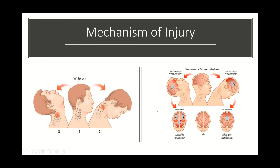Another thing we don't want to forget is what's happening to the brain during a whiplash injury. If there is any type of whiplash injury that occurs, whether it's from a sport, an auto accident, or a significant fall, we also want to consider concussion, because the brain moves forward and back. That is also the mechanism of concussion where the brain is jarred in those movements. So we want to do a concussion protocol and make sure the person doesn't also have a concussion along with a whiplash injury.